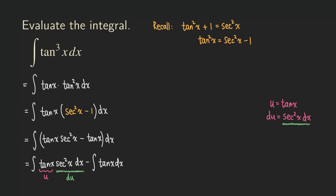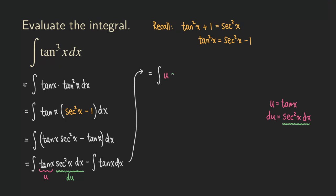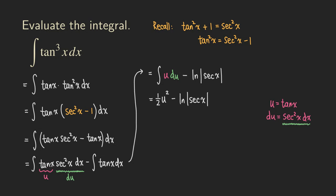So now we are turning the first integral into the integral of u times du. For the second integral, we can integrate directly — we know the antiderivative of tangent is ln of absolute value of secant x. So we integrate u with respect to u directly, giving us u squared times one-half, and then the second term is minus ln of absolute value of secant x.